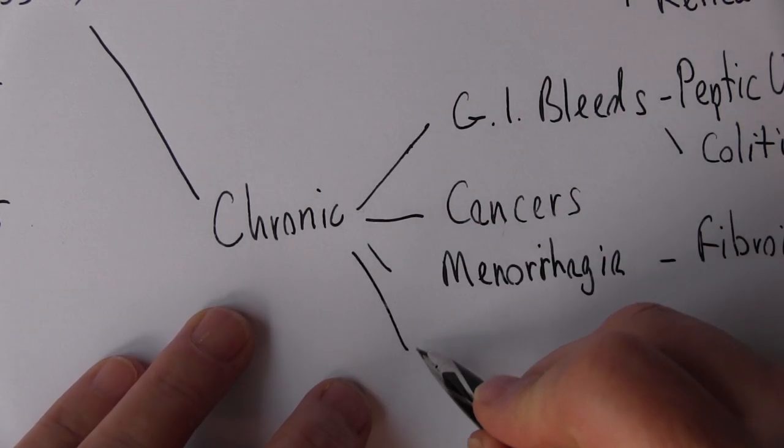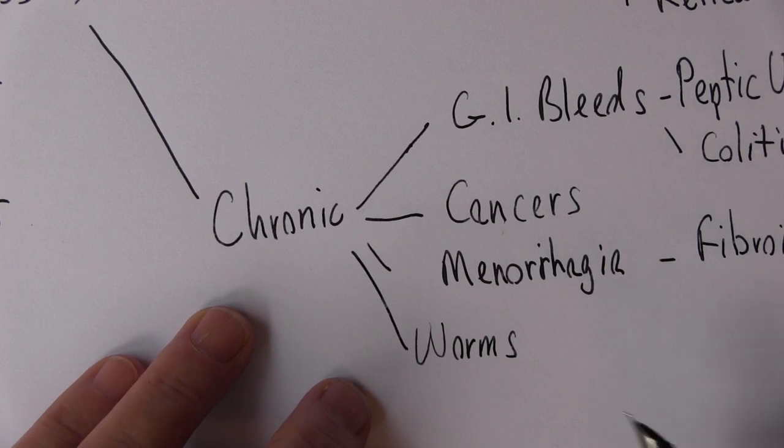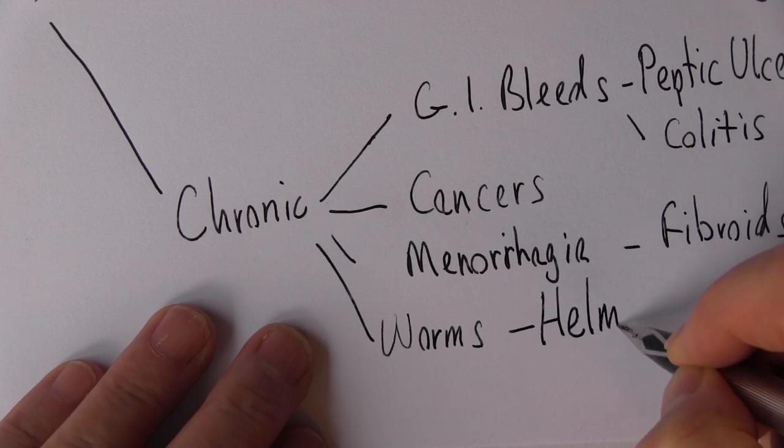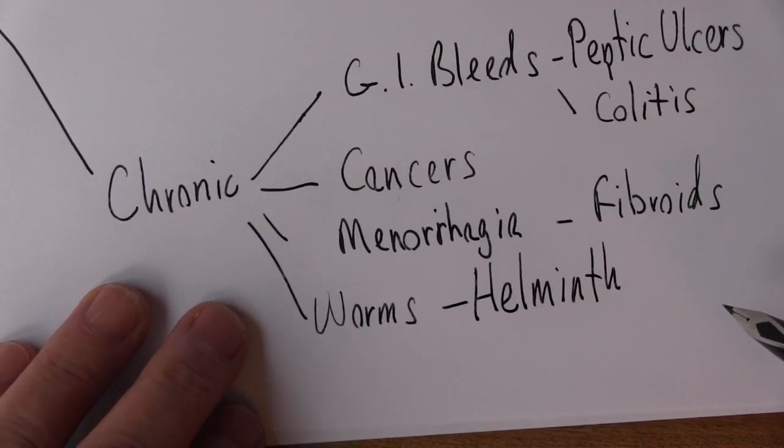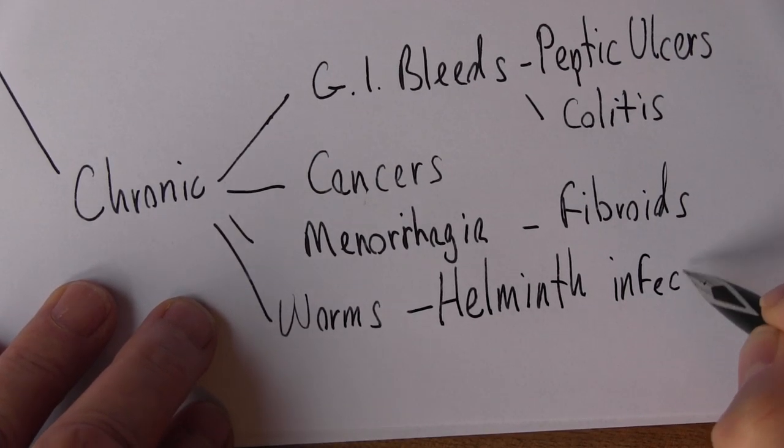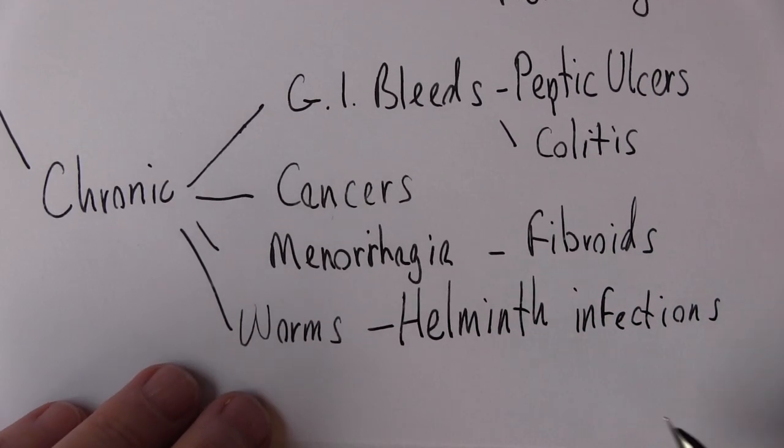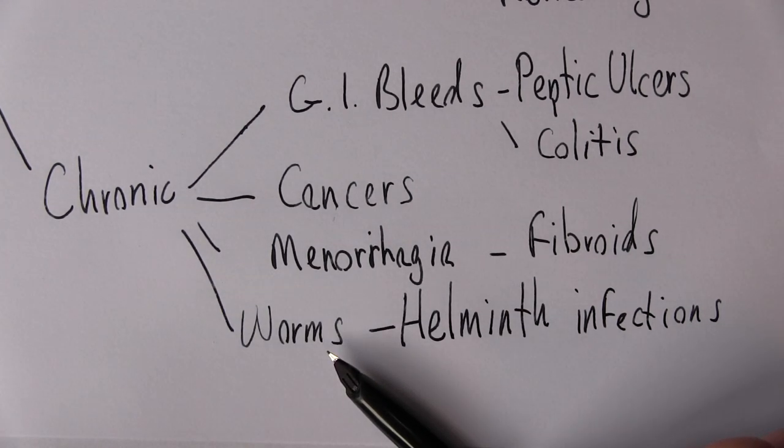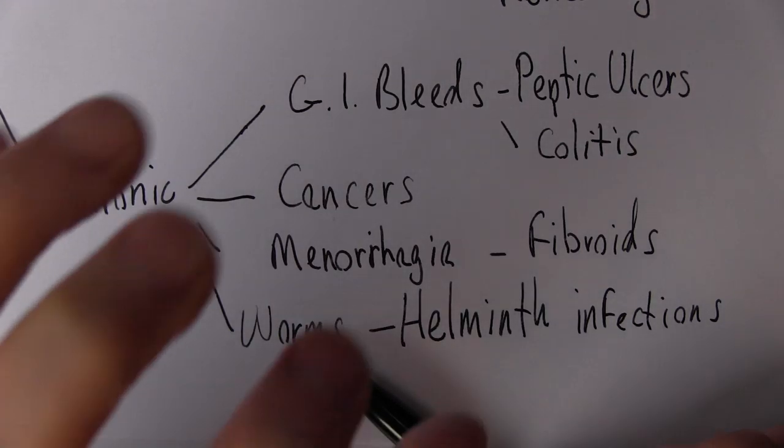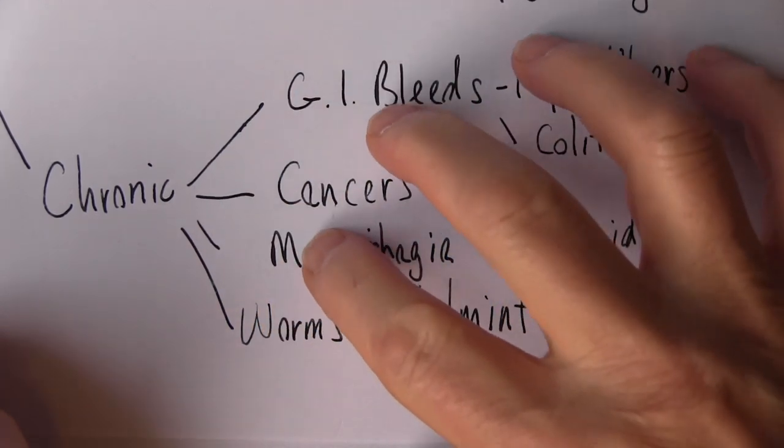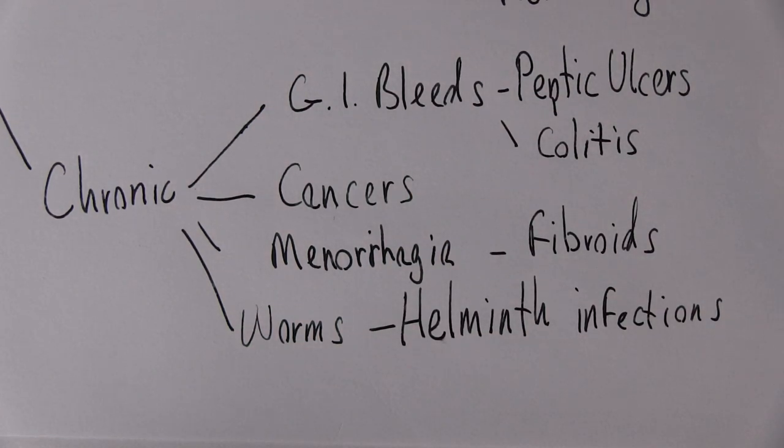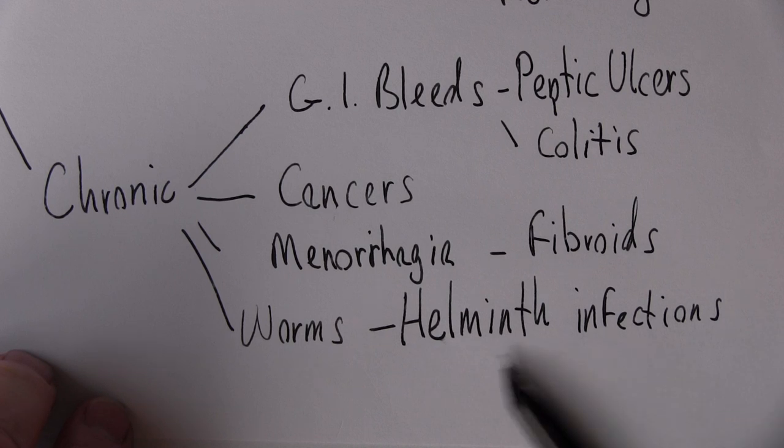Or another global problem is worms, gastrointestinal helminth infections. So roundworms and flatworms will cause a degree of blood loss and will eat the nice nutrients that the person's eating. But particularly the hookworms are a problem here, because their mouth pieces stick into the gastrointestinal tract and suck the blood. Very significant global cause of chronic blood loss anemia. Very easy to treat with albendazole for example.